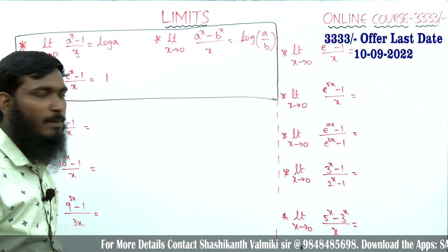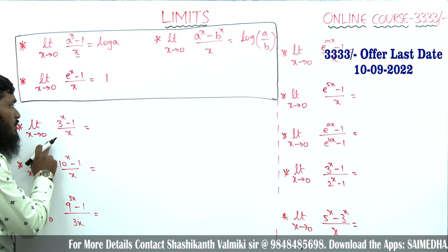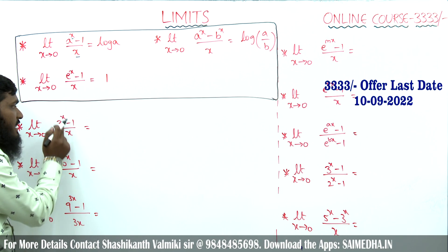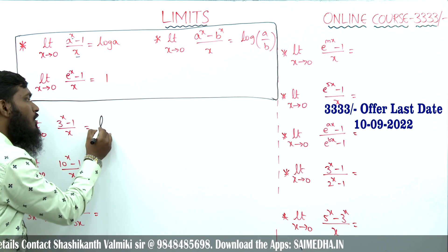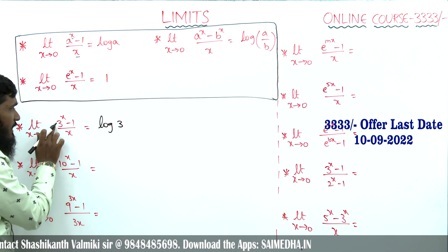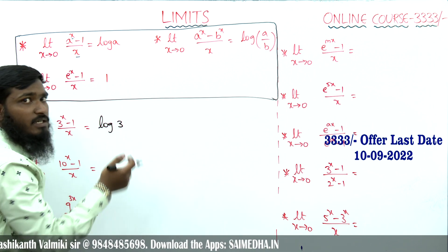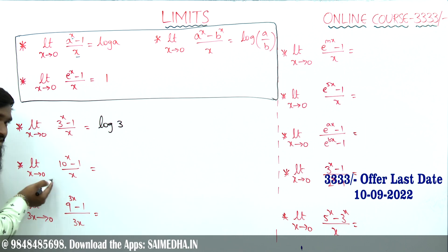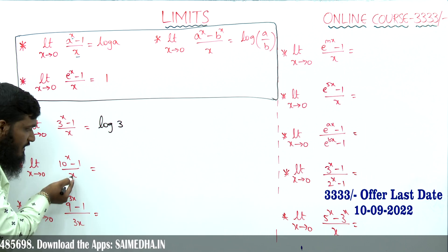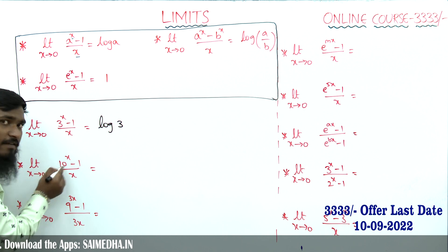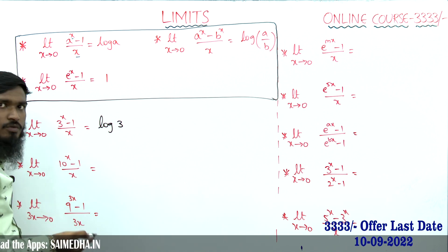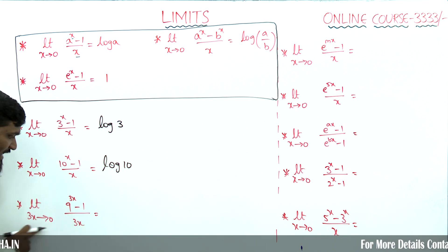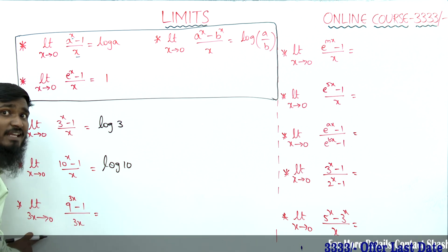Limit x tends to 0, 3^x minus 1 divided by x: x is tending to 0 and the x parts are the same, so the answer is log 3. Similarly, limit x tends to 0, 10^x minus 1 divided by x: the x parts are the same, a equals 10, so the answer is log 10.